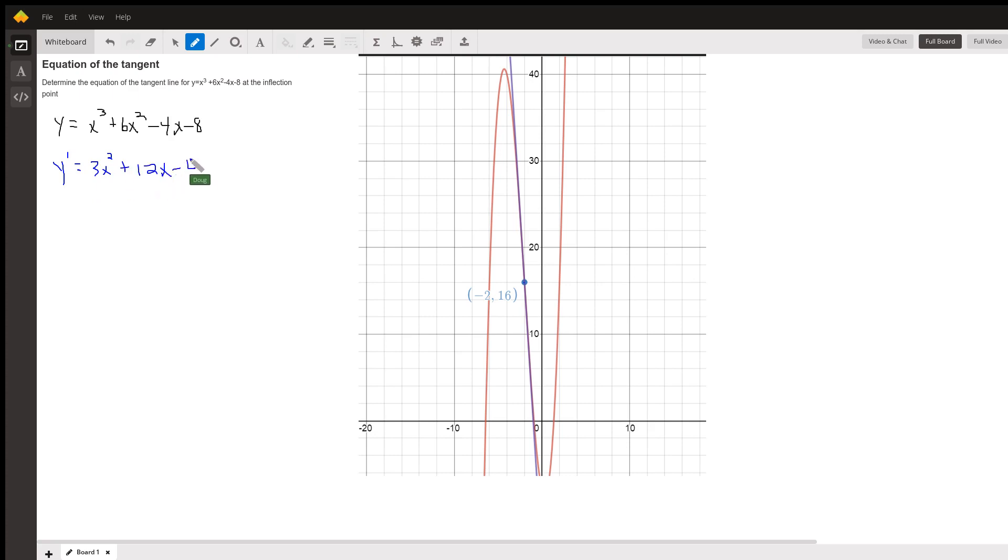And we're going to have to find the second derivative in order to find the point or points of inflection. Now, a point of inflection will happen where the second derivative is equal to 0 and that happens when x equals minus 2.